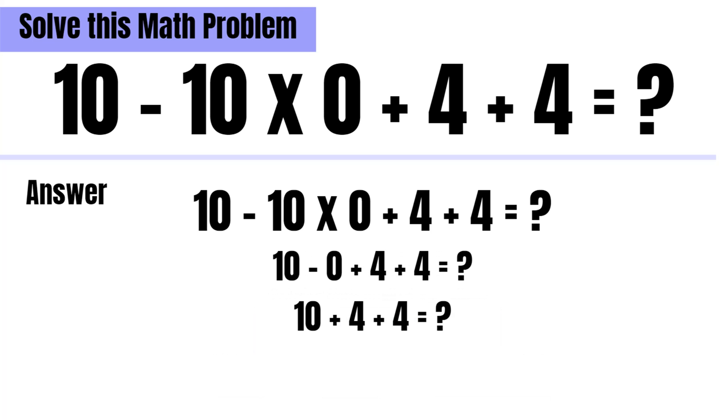So the equation becomes 10 minus 0 plus 4 plus 4 is equal to question mark. So if we remove this minus 0 from the equation, the equation becomes 10 plus 4 plus 4 is equal to question mark.